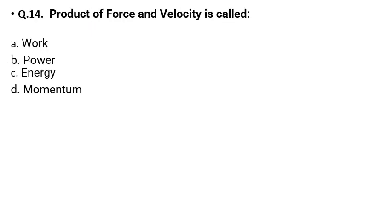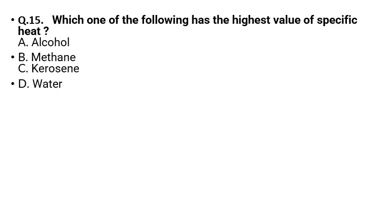Question number 14: What is the product of force and velocity? The options are work, power, energy, and momentum. Option B — power — will be your correct answer. Question number 15: Which one of the following has the highest value of specific heat? The options are alcohol, methane, kerosene, and water. The highest specific heat is that of water. Specific heat will be maximum in water.